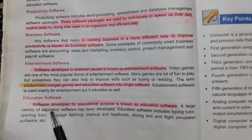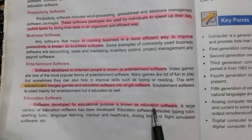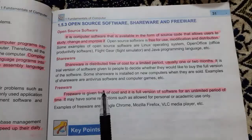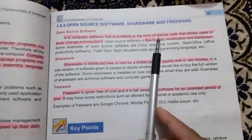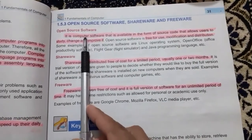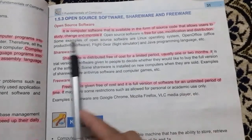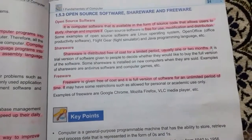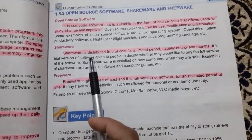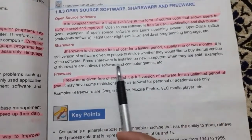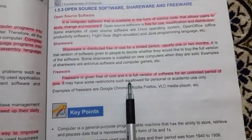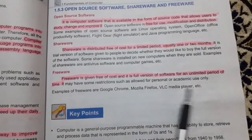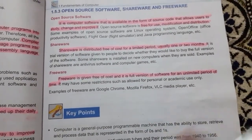Educational software is developed for educational purposes. Other types of application software include open source software, in which you can make changes; shareware, which is available for a limited period before you must purchase it; and freeware, which is always free — examples include Google Chrome, Mozilla Firefox, and VLC Media Player.